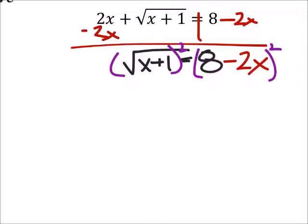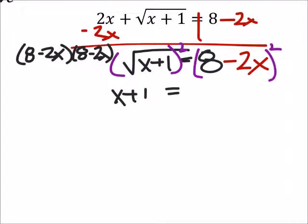So, well, that's going to leave us with an x plus 1, which is pretty nifty. But on the other hand, that's going to change a lot of stuff. Well, I guess we can show the work for this one. 8 minus 2x times 8 minus 2x.